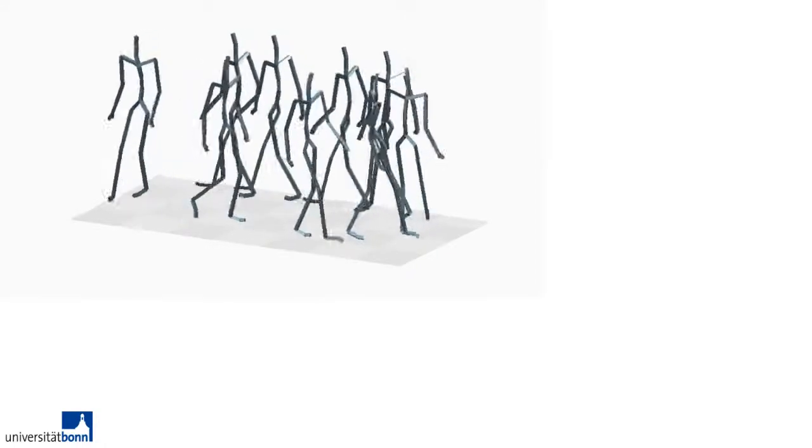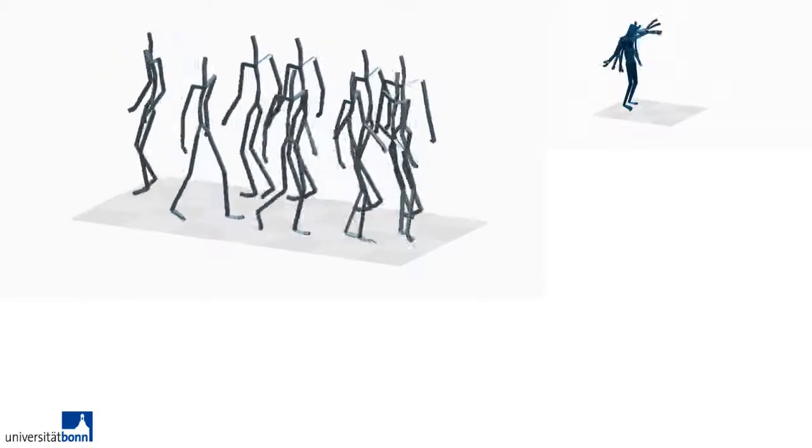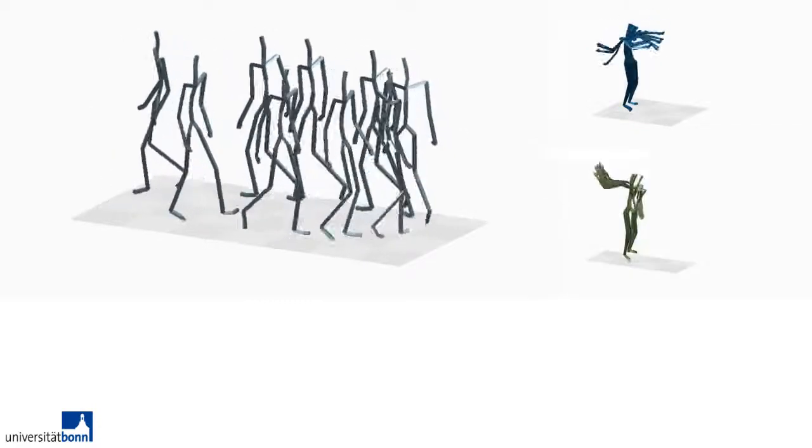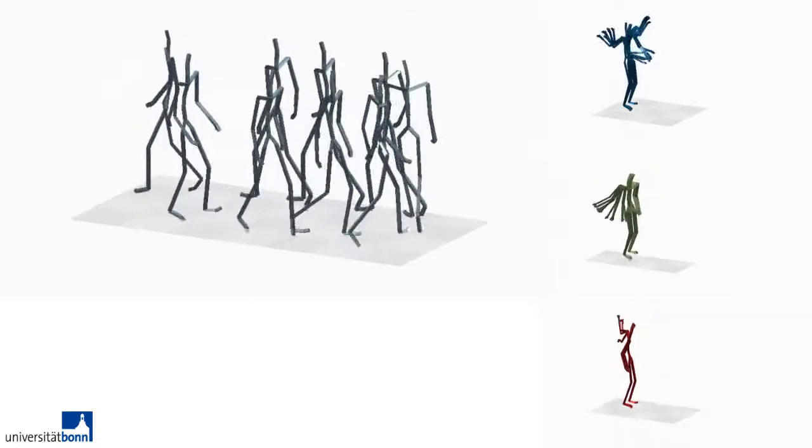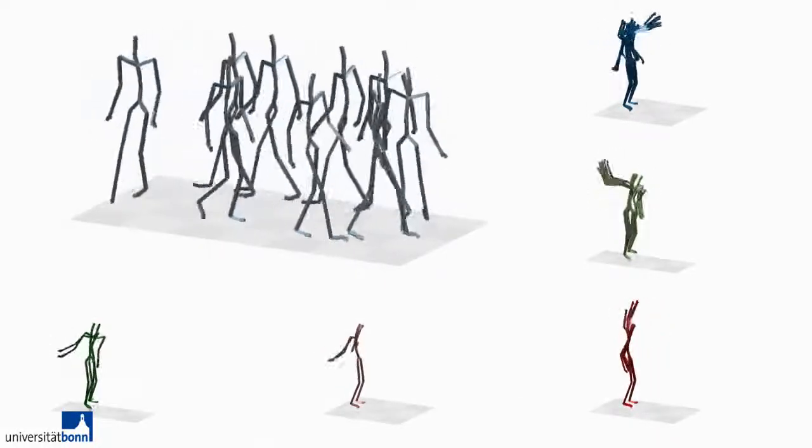This is the cluster of all double steps found in the sequence. There are three different classes of arm rotations: both arms, right arm, left arm, and also some smaller primitives which are transitions between the other actions.